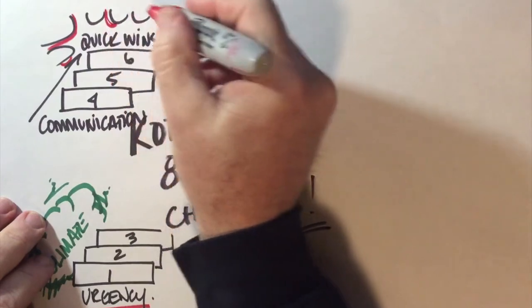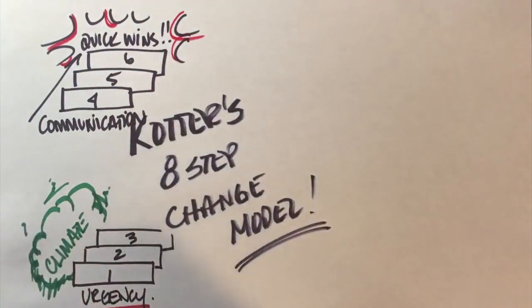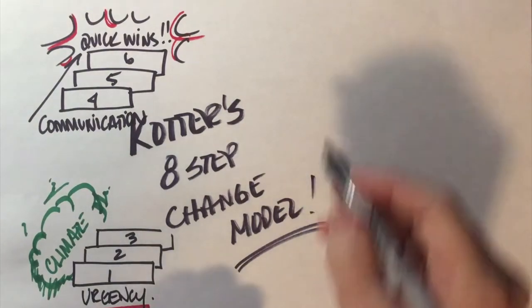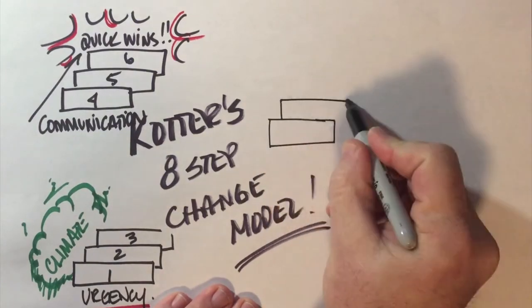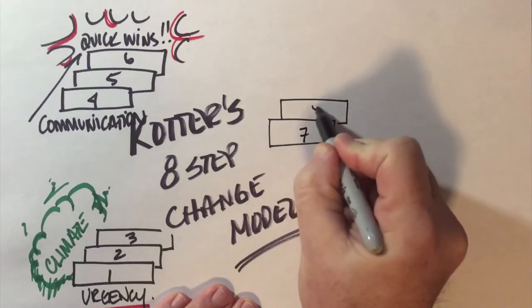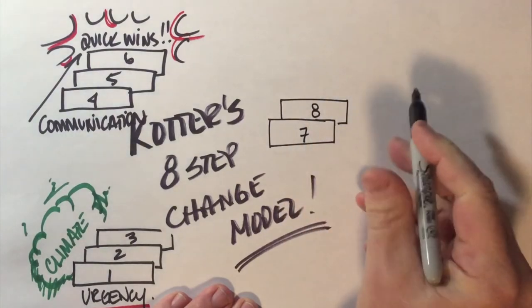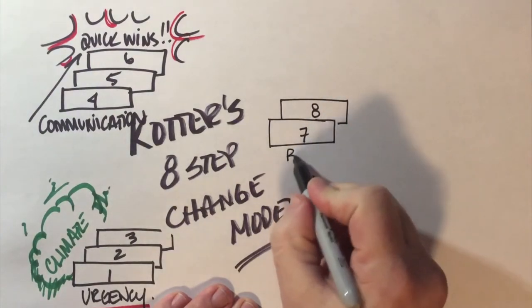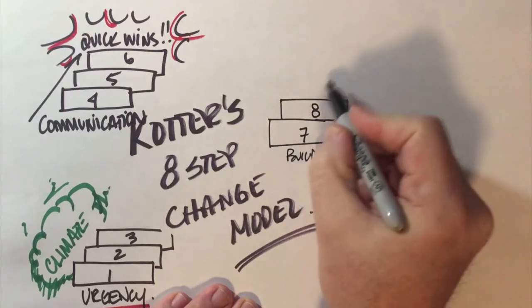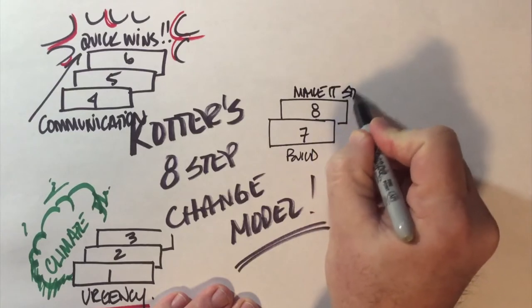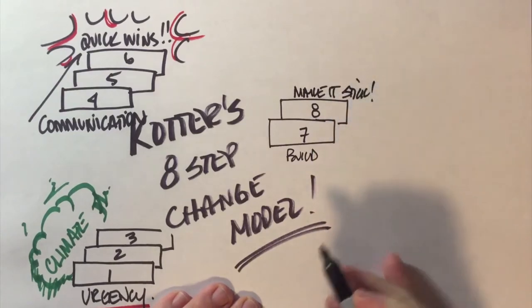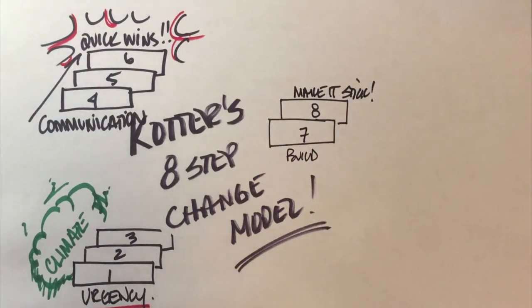The whole intent is to get to that sixth step to create some kind of quick win for the organization to start gaining momentum. He lists this step as probably one of the most important steps in the whole process because without any quick wins you're not going to create that momentum. The final two steps in his model are significant in that they bring the whole thing back into itself. He calls seven and eight build and then make it stick. You're building on the momentum that you've garnered in step six and the quick wins.